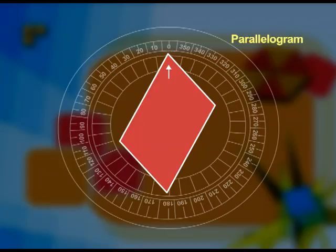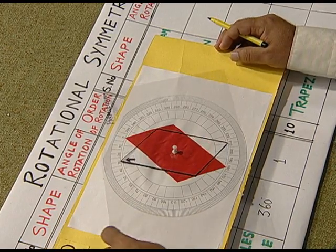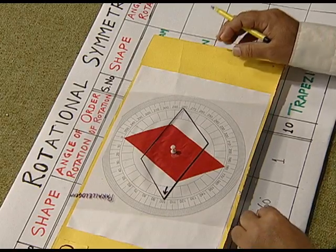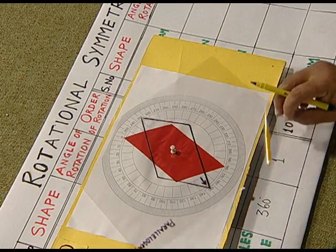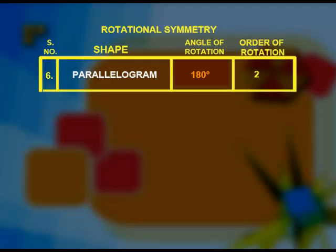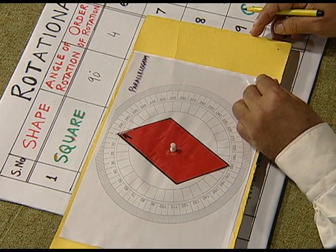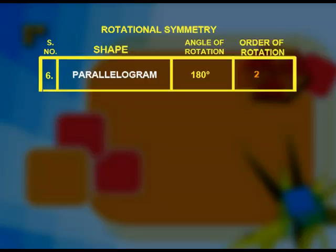Next, we take the case of a parallelogram. Just like a rectangle, we find that it is only after 180 degrees that the parallelogram coincides with itself. Therefore, the angle of rotation is 180 degrees. On a further rotation of 180 degrees — a total of 360 degrees — it takes its original position. The order of rotation of a parallelogram is 2.